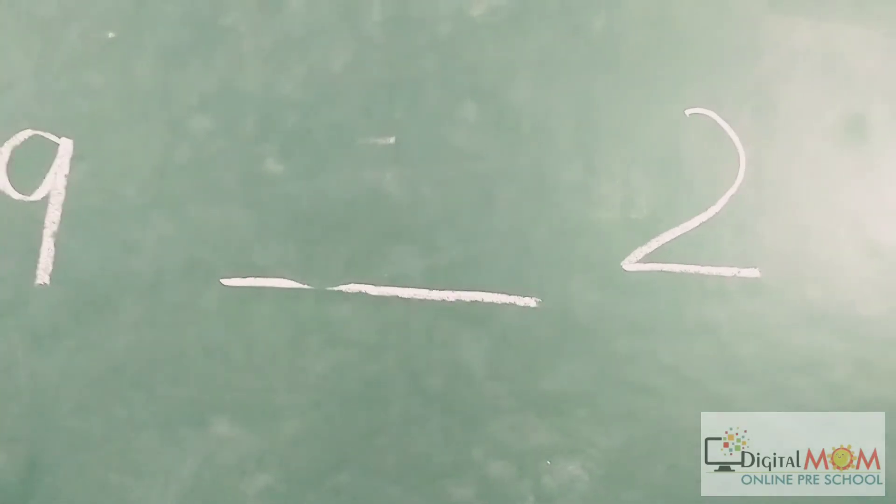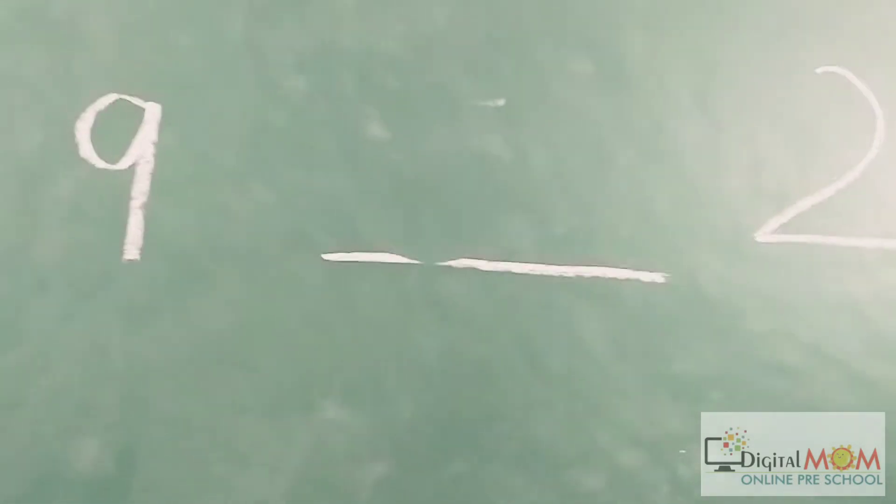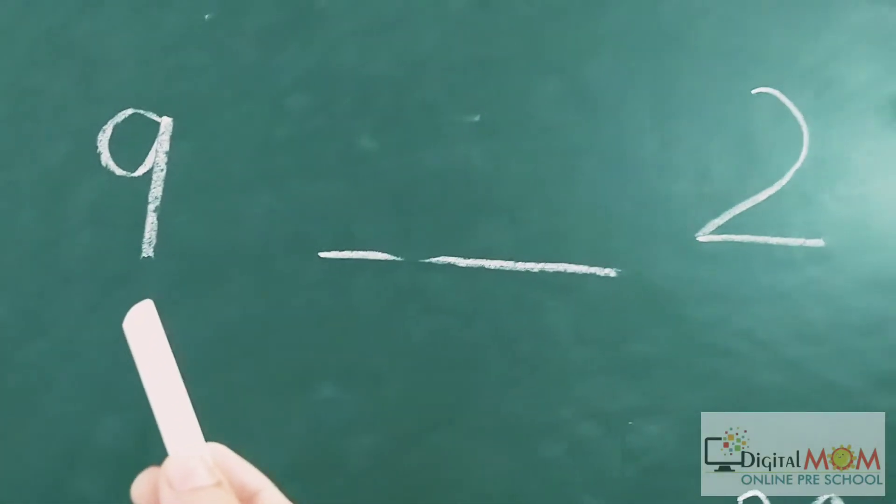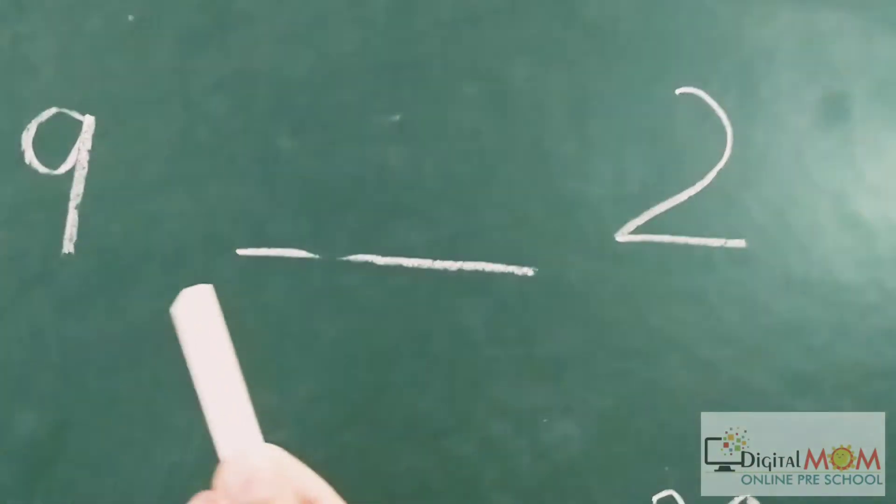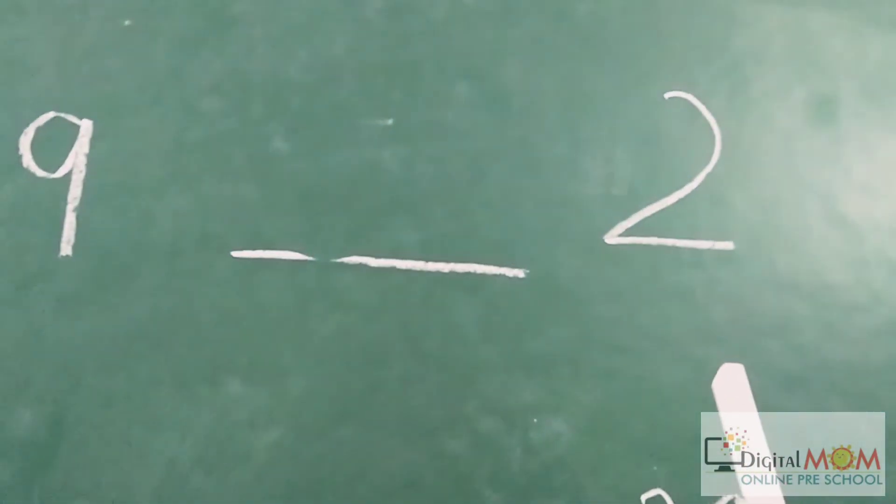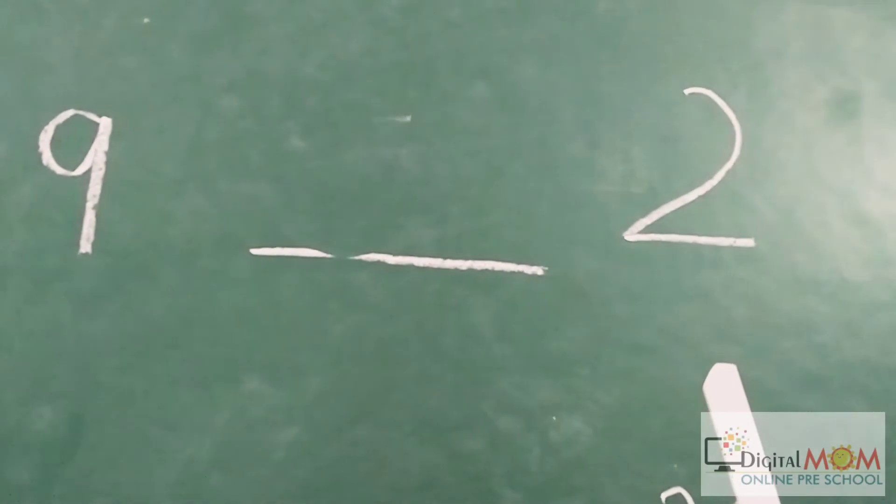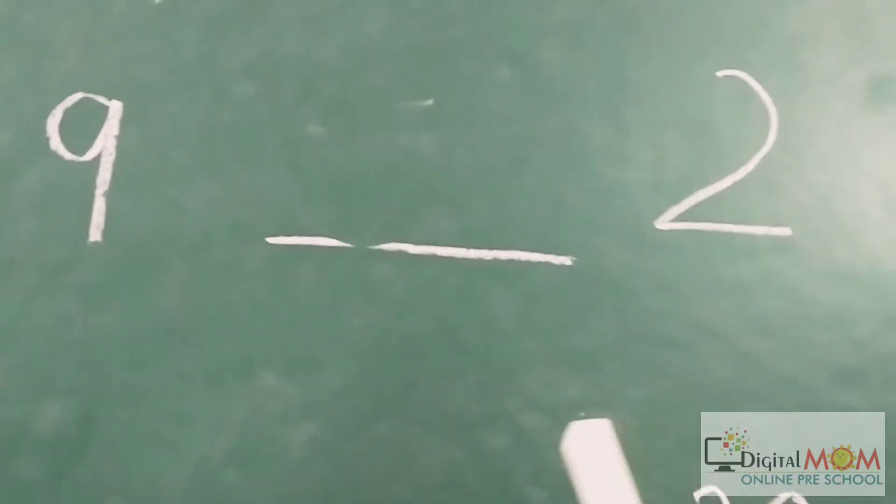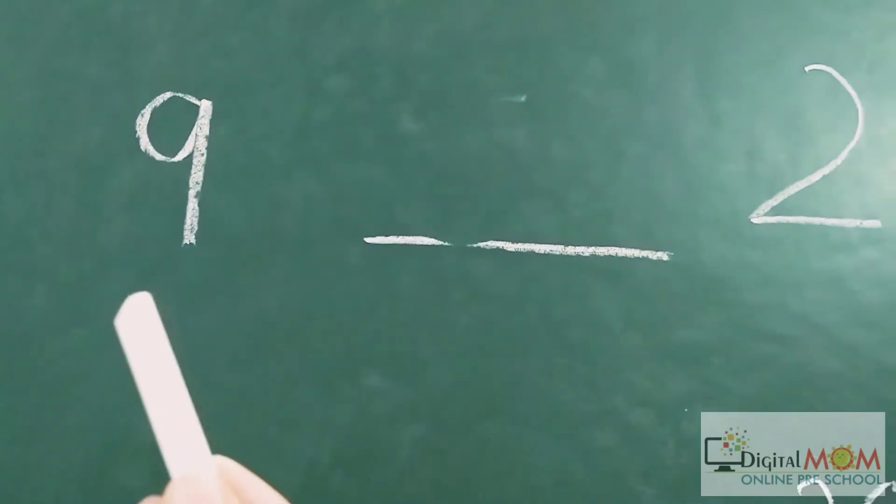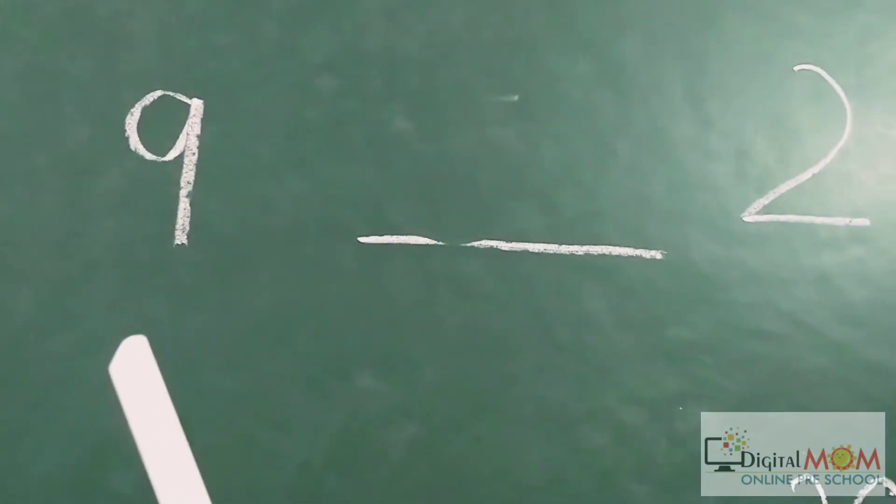Here we are having number nine and on the other side number two. Now compare which number is greater. If you are feeling any problem, just think: if number nine is here, you will get nine chocolates, but if number two is here you will get only two chocolates.